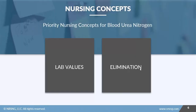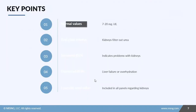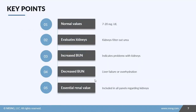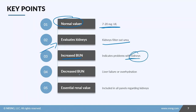When we're talking about blood urea nitrogen, we're focusing on lab values and elimination, because BUN is really associated with the kidneys. To recap: normal values for BUN are 7 to 20 milligrams per deciliter. Elevated BUN suggests a kidney issue, since the kidneys filter out the urea. Decreased BUN values suggest liver failure due to impaired conversion of ammonia to urea, or overhydration. It's an essential renal value included in all kidney function panels.